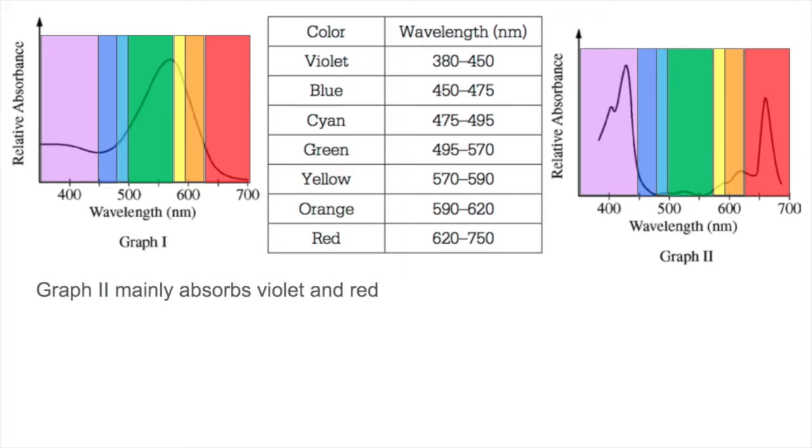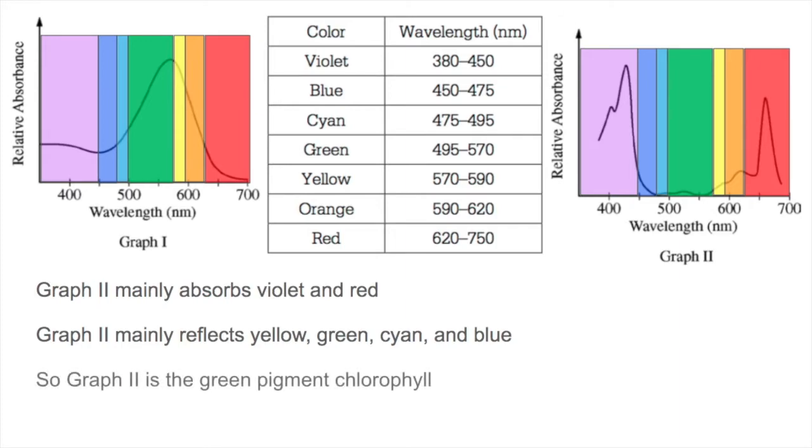Looking at graph 2, we can see that the peaks are in violet and red, so those are the wavelengths of light that we do not see. And it reflects yellow, green, cyan, and blue, which are the wavelengths that we do see. And so graph 2 is most likely the green pigment chlorophyll.